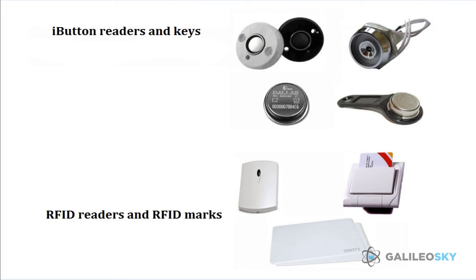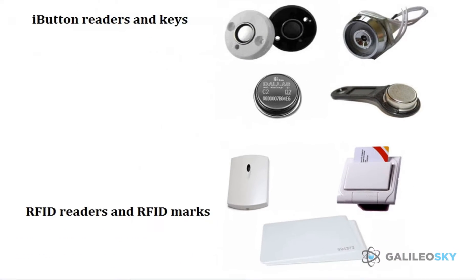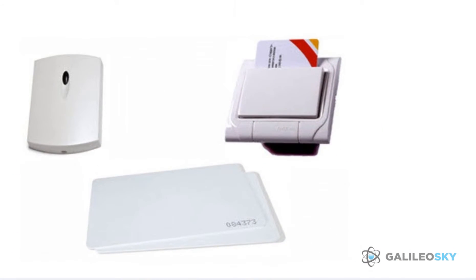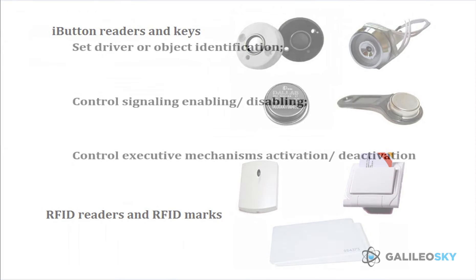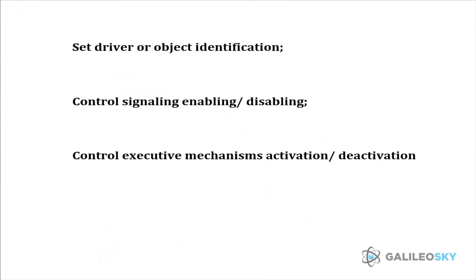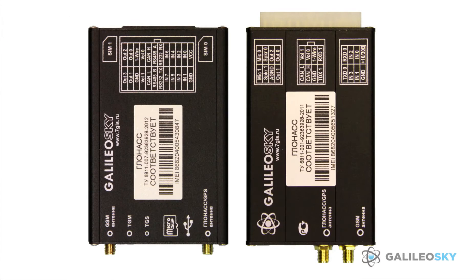It is possible to connect sensors and devices to GalileoSky terminals via one wire, for example, iButton keys and RFID marks readers. Using iButton keys and RFID marks, you can set driver or object identification, control signaling — enabling, disabling — and control executive mechanisms: activation and deactivation.